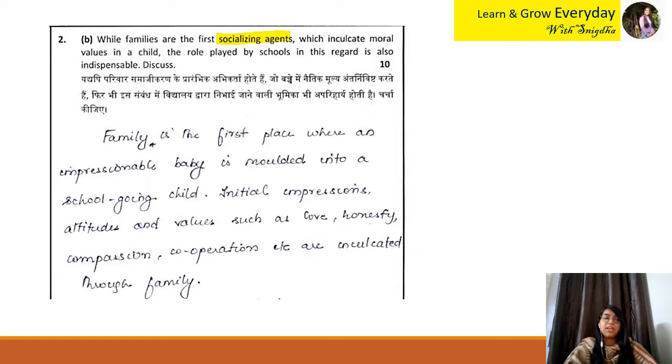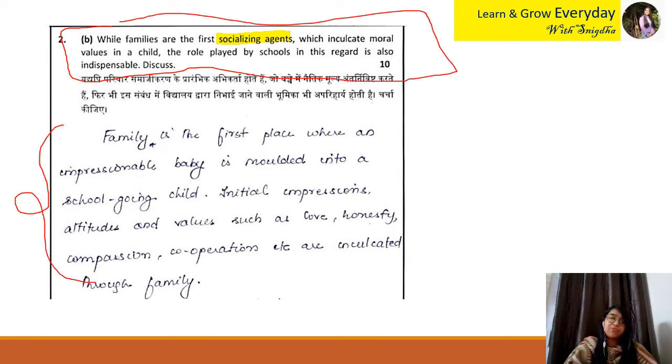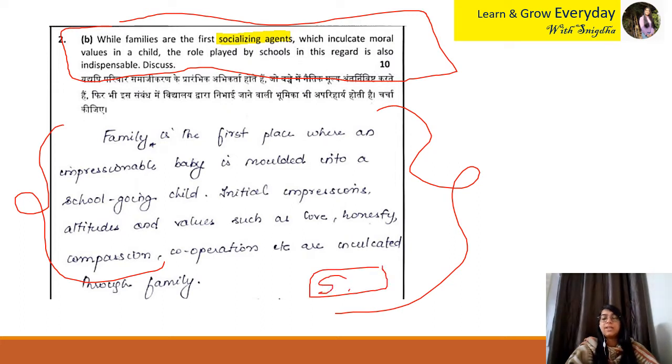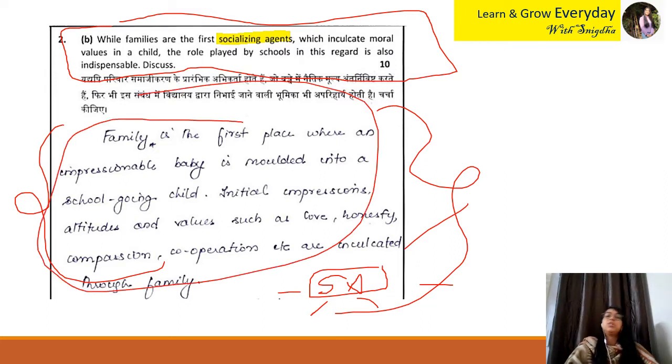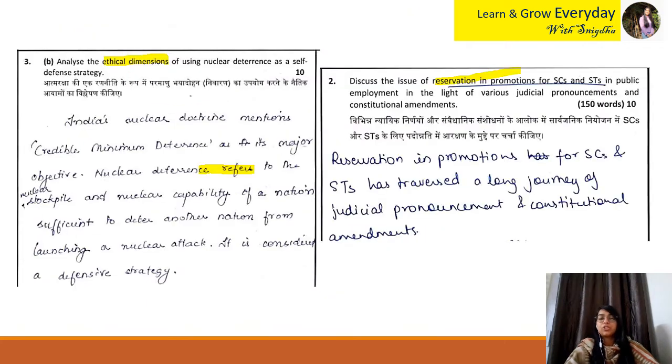For example, in this answer about socializing agents and family, the introduction could be more impressive. Start from the concept of socialization, socializing agents - what are they? You can write in a diagrammatic form such as socializing agents: family, media, schools, teachers, peers. You can create a diagram instead of giving a boring introduction. This way you can try to modify your introduction.